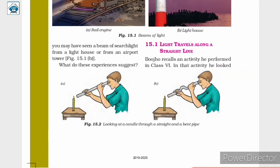In class 6, you performed an activity in which you looked at a lighted candle through a straight pipe, as shown in figure 15.2a, and then through a bent pipe, as shown in the next figure.